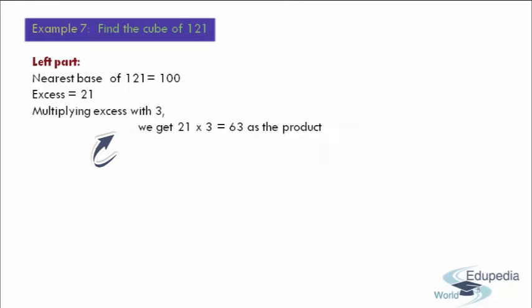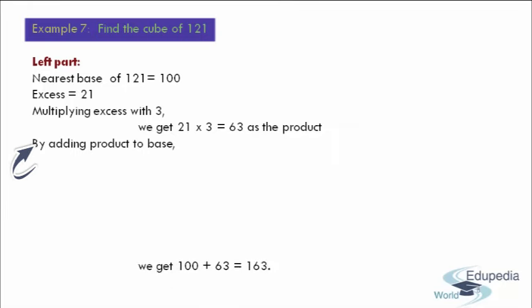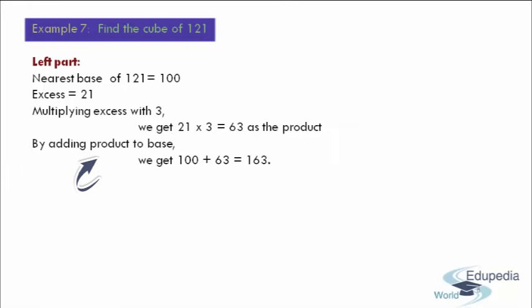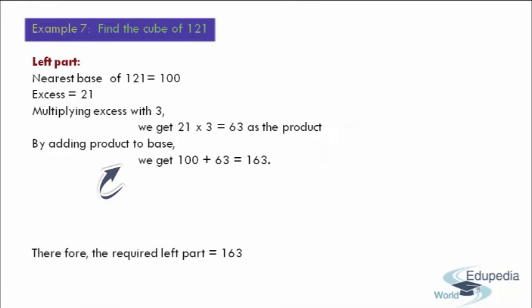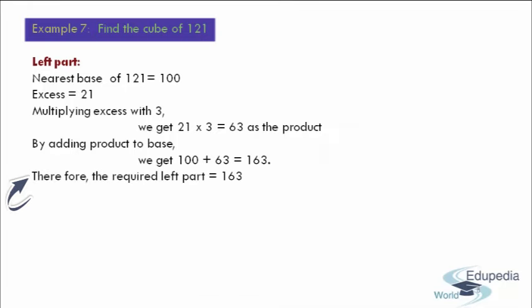After getting this product, moving to step number 4, what we have to do is we have to add this product to the base. So therefore by adding, we get 163 as the sum. And now this 163 is regarded as the required left part.